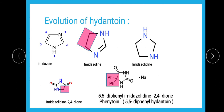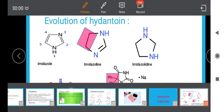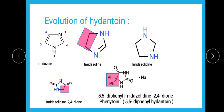We have obtained imidazolidine, and now 2,4-dione remains. When we number the ring — positions 1, 2, 3, 4, 5 — the second and fourth positions should contain ketone (dione) groups. So imidazolidine with carbonyl groups at the second and fourth positions becomes imidazolidine 2,4-dione, which is nothing but hydantoin.